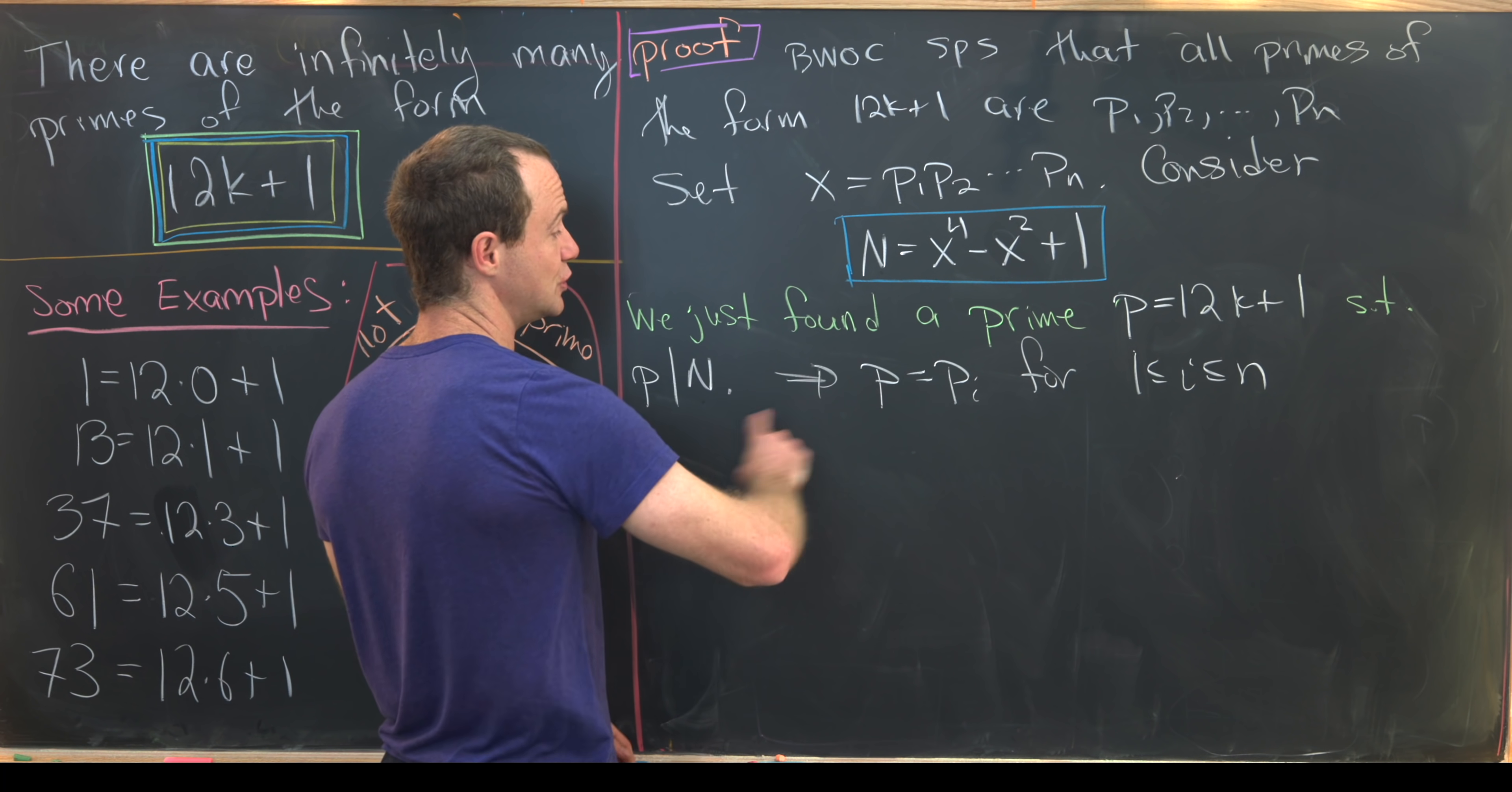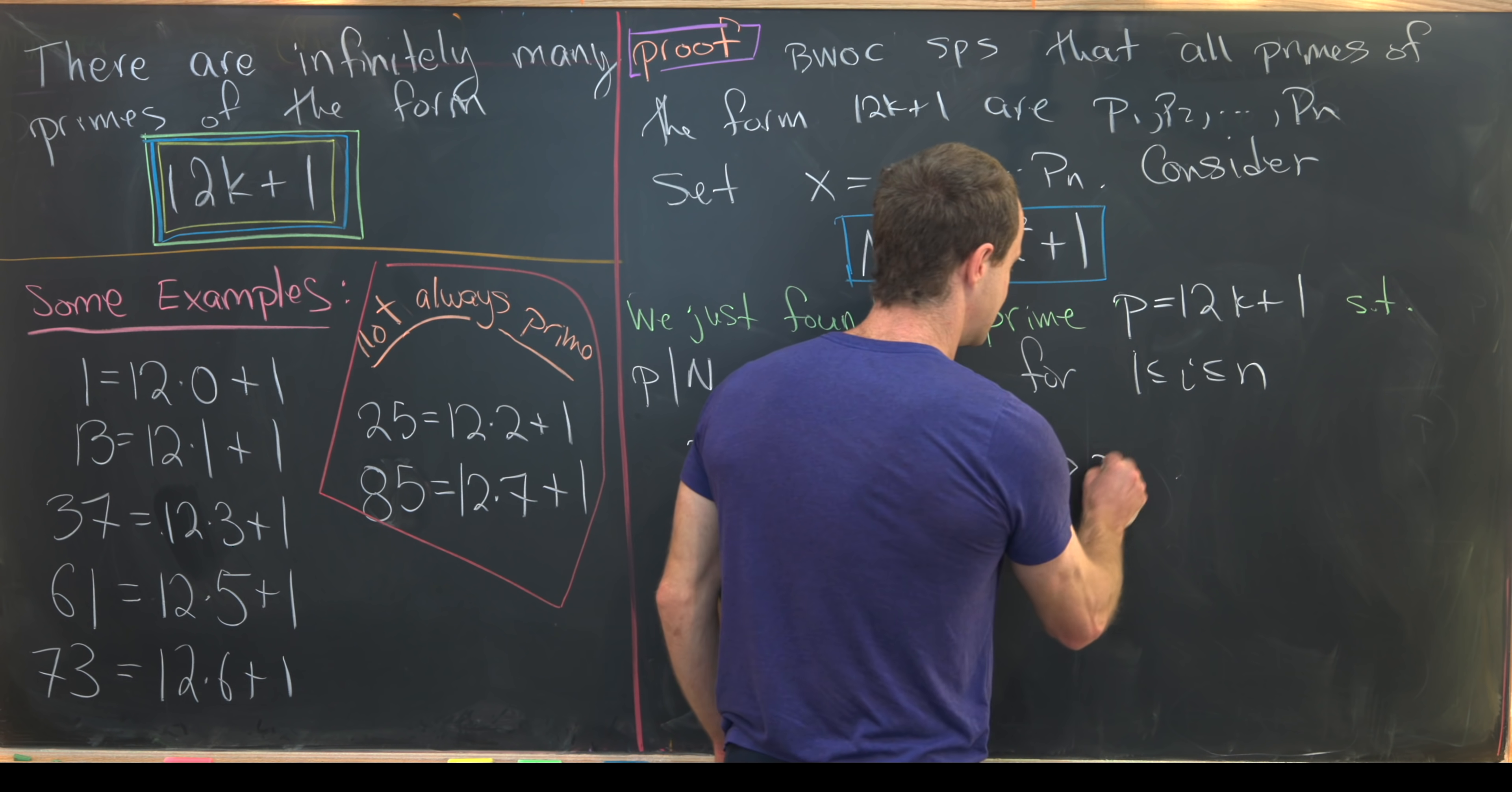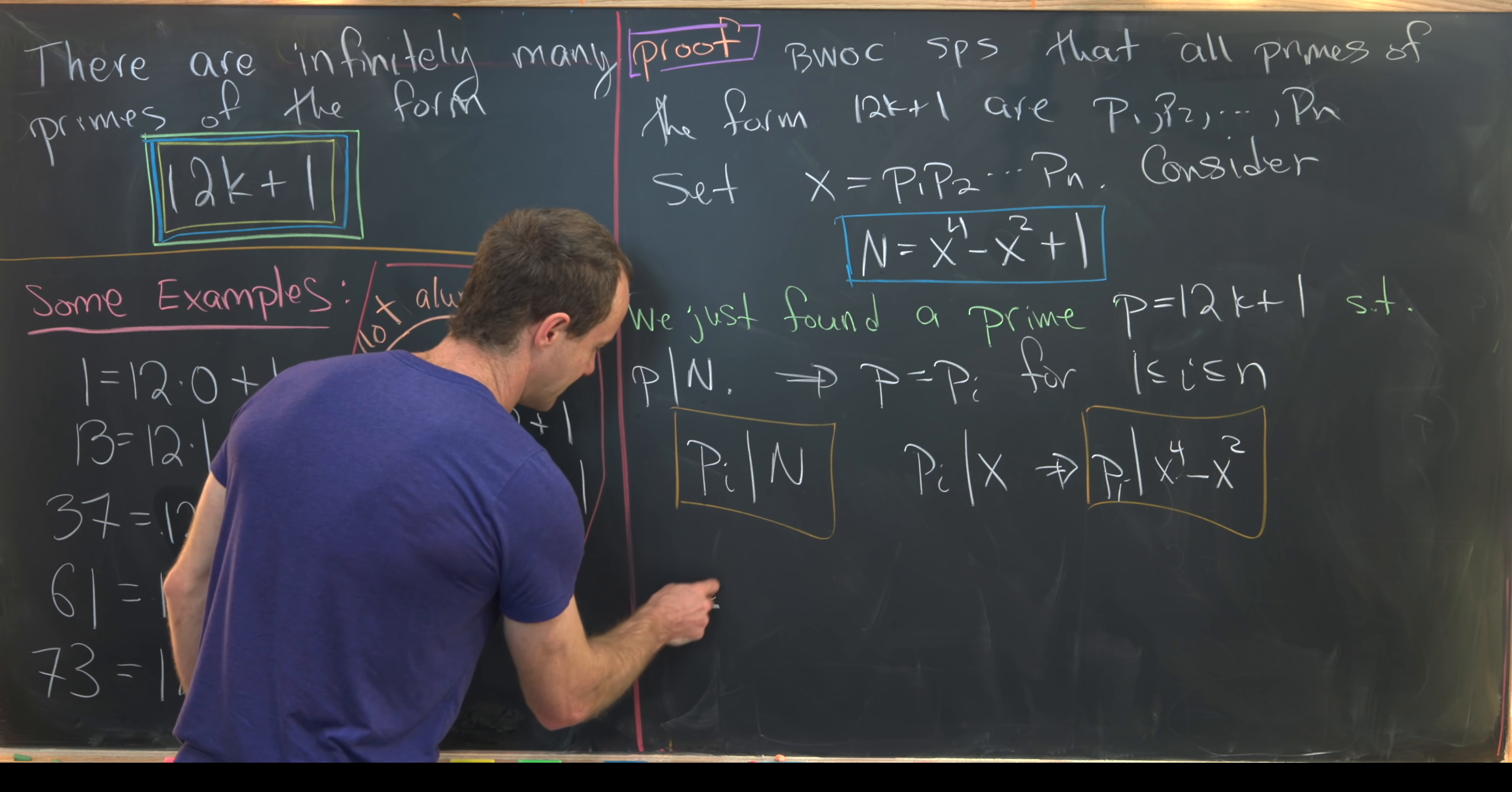Now that brings us to two observations. So pi divides n. That's just rewriting this fact right here, which is what we started with, with p equals pi. And also pi divides x. Well, that's because x is a product of all of these primes, including pi. Pi is somewhere in the middle there. But if pi divides x, that means that pi most definitely divides x to the fourth minus x squared, because that's a multiple of x. But we're about to have a problem, because if we put these two orange boxes together, we can see that pi divides 1. So if something divides a number and another number, it divides any linear combination of those two numbers.